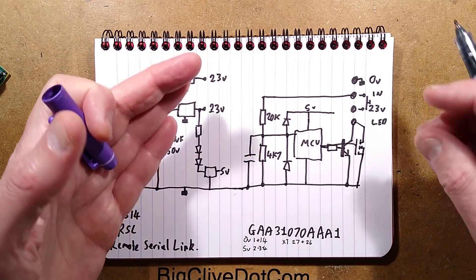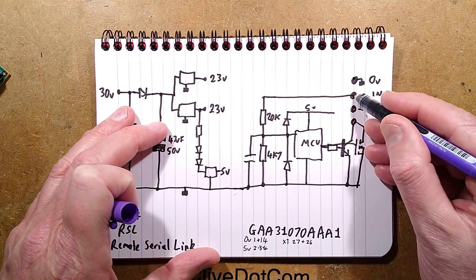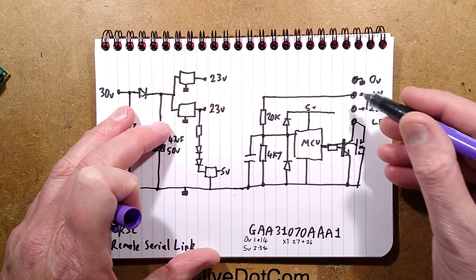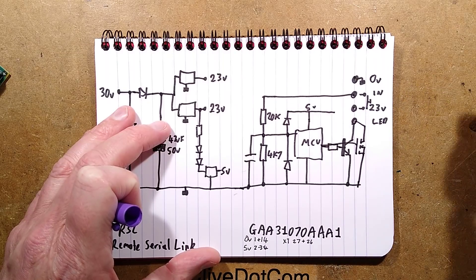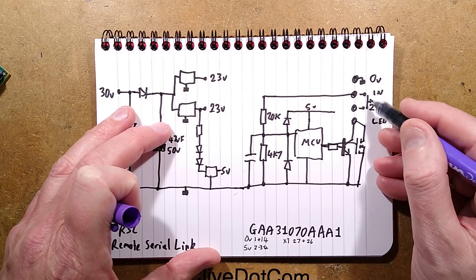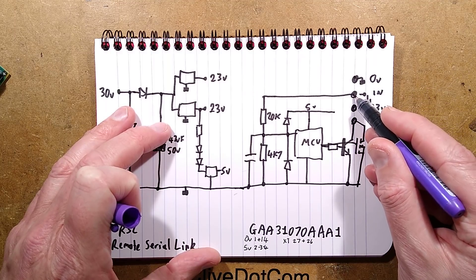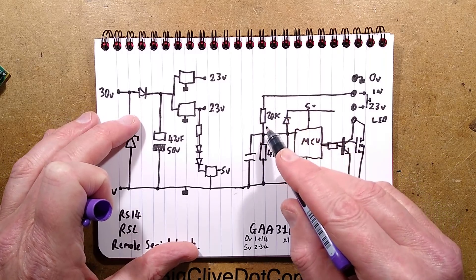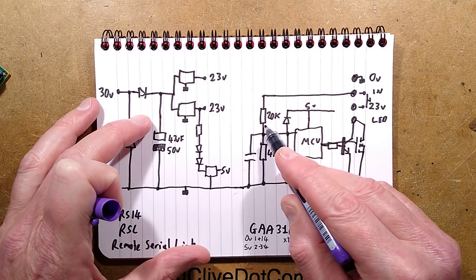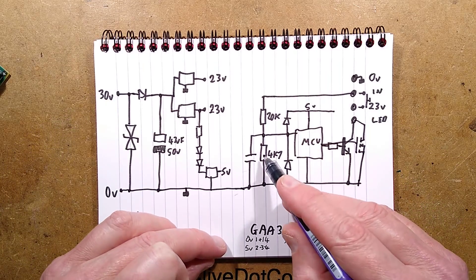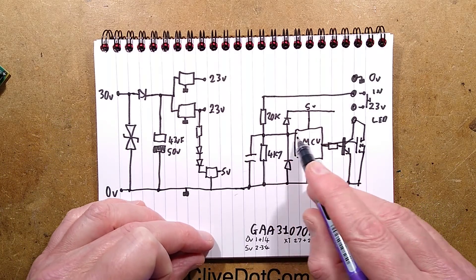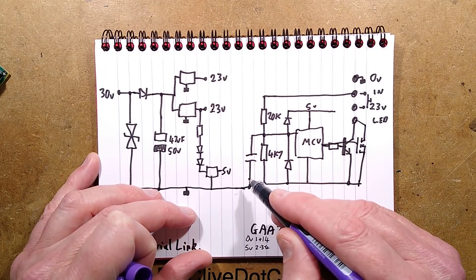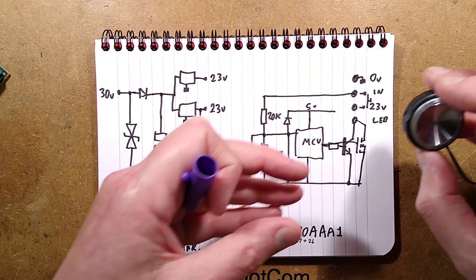When you push the button, it doesn't use the zero volts - I guess that's just optional. It bridges the 23 volts to the input pin. That goes through a 20k resistor to limit current and forms a potential divider with the 4k7 to bring it to a level the microcontroller can safely handle. There's also a decoupling filter capacitor to remove noise.